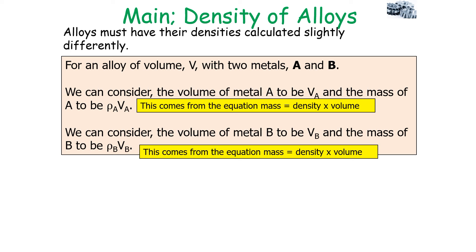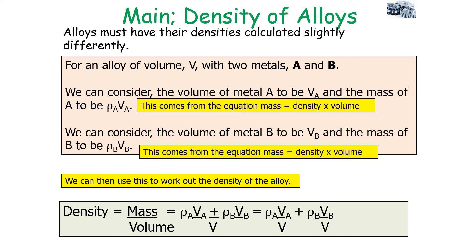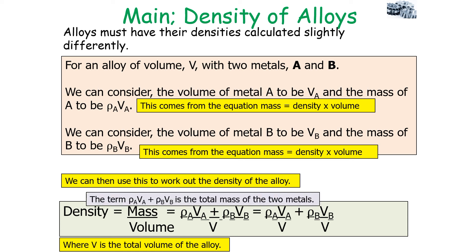Similarly, the volume of metal B is VB, and the mass of B is rho_B times VB. We can then use this to work out the density of the alloy, since density equals total mass divided by total volume. You work out the mass of each metal in the alloy — rho_A times VA plus rho_B times VB — add them together to get the total mass, then divide by the total volume V to get the alloy's density.